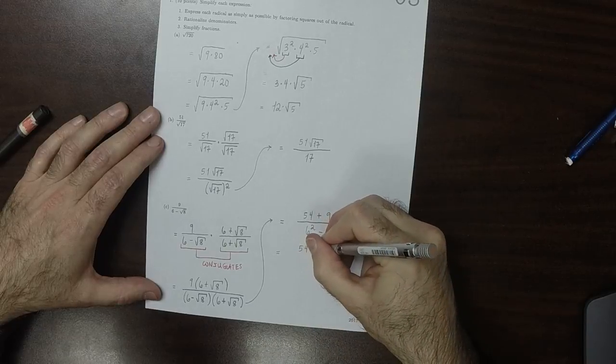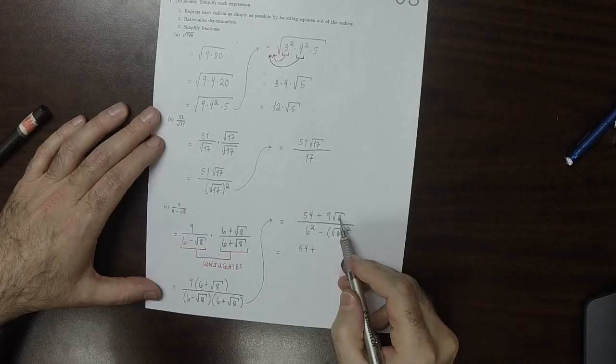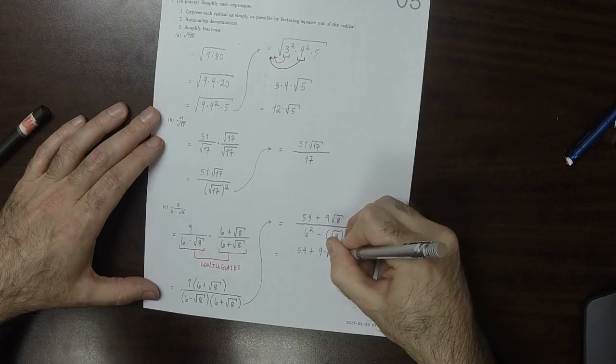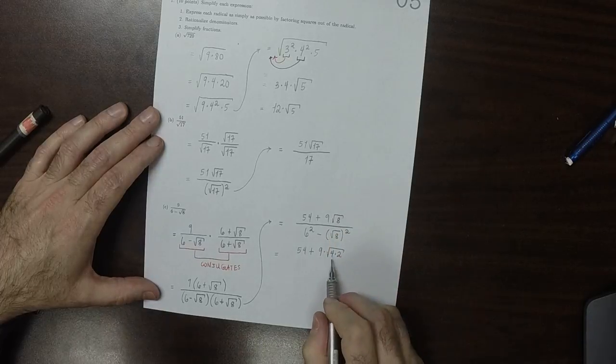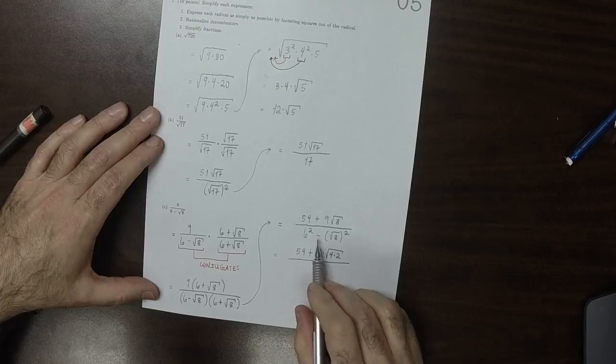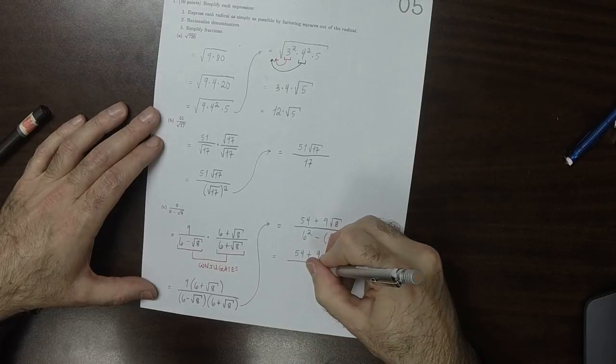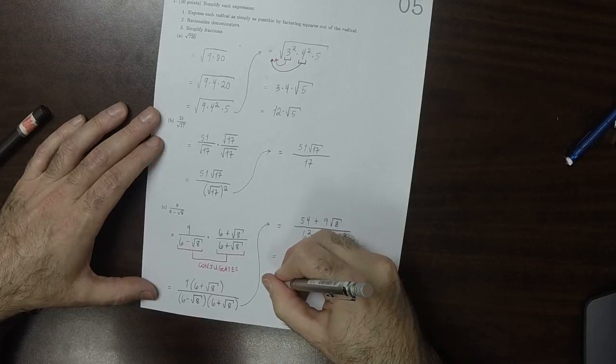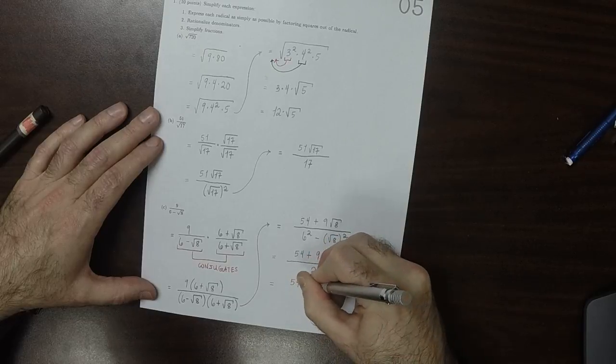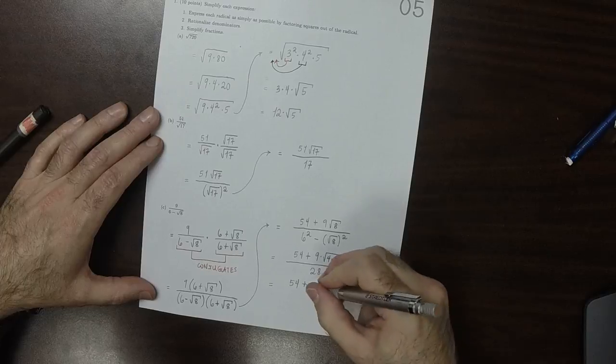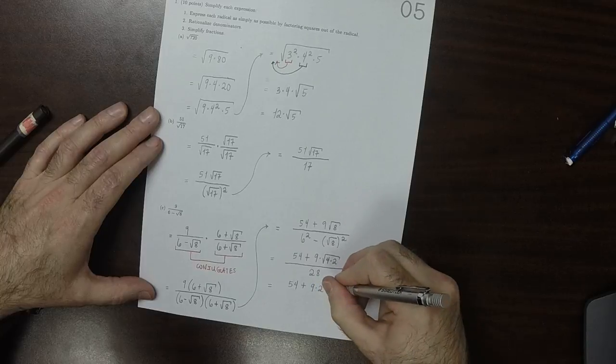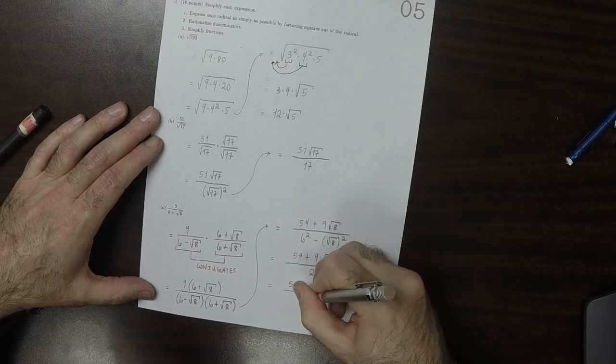OK, so 54, that's as good as it gets. And then plus, now, that's 9 multiplied by the square root of 4 times 2, because that's 8. And that 4 is 2 squared, so it can come out as a 2. This is 36 minus 8, so that would be 28. So that would be 54 plus, when this 4 comes out as a 2, that becomes 9 times 2 square root 2 over 28.